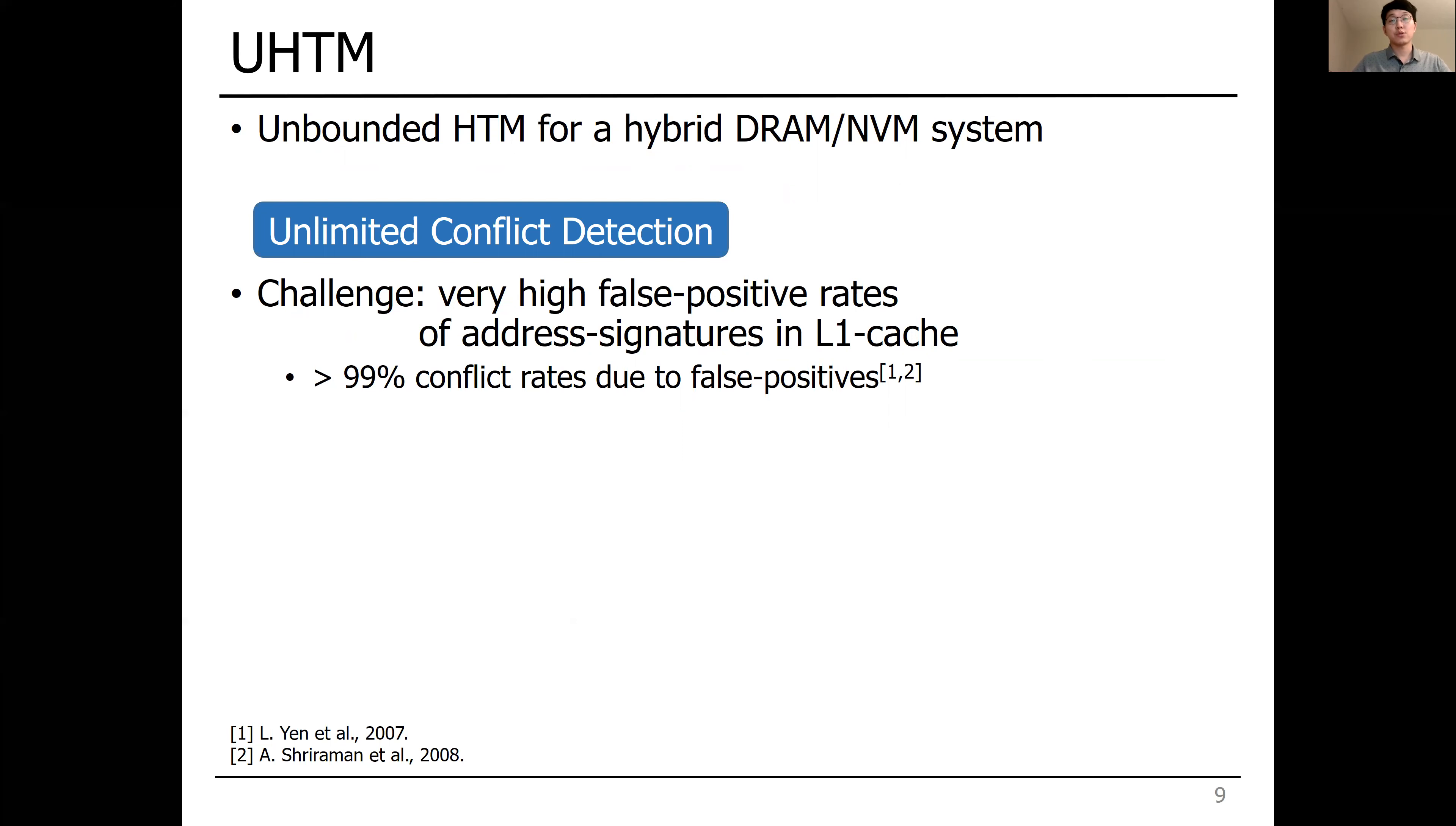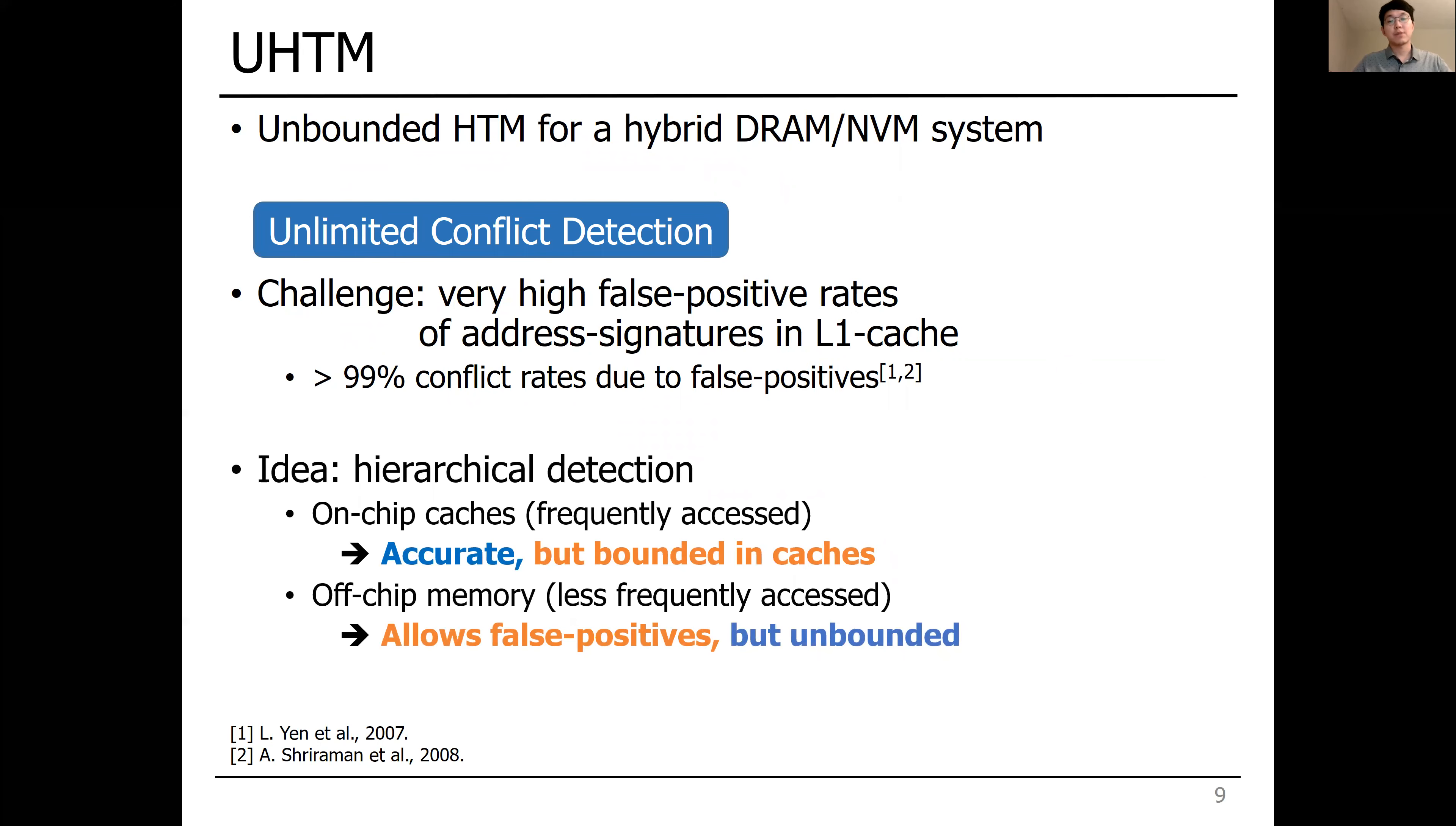So we should reduce the false-positive rates to provide efficient durable transactions. The key idea of UHTM is to differentiate detection based on the memory hierarchy. For example, within on-chip caches, since they are frequently accessed, we need a technique that is accurate.